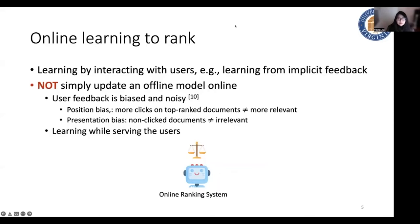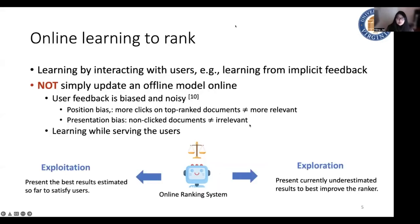Therefore, as the model is learning while serving the users, it needs to balance the exploitation and exploration. For exploitation, the system needs to present the best results estimated so far to satisfy users. And for exploration, the system needs to present currently underestimated results to best improve the ranker. However, exploration for online learning to rank is non-trivial. Due to the combinatorial property of the ranking, the search space is exponentially large. So effective and efficient exploration for online learning to rank is critical.